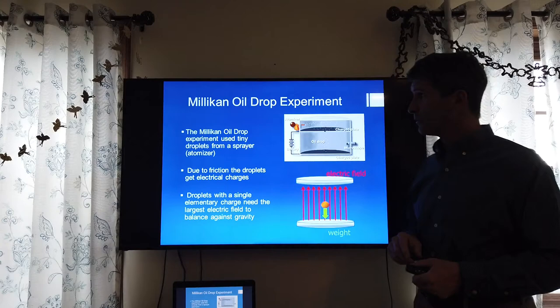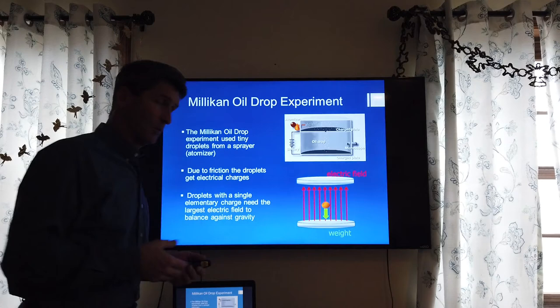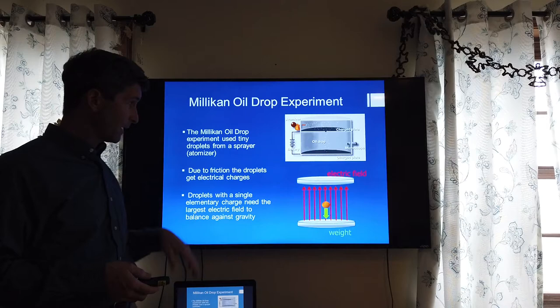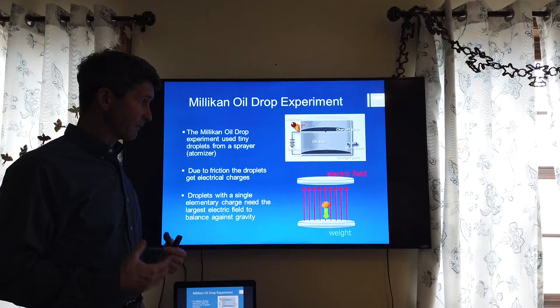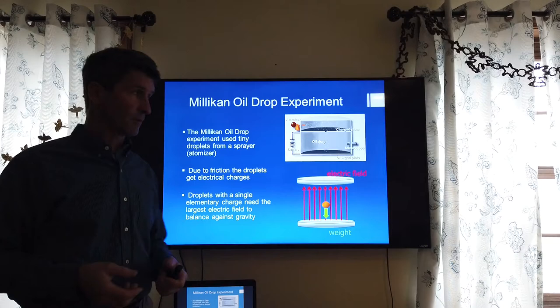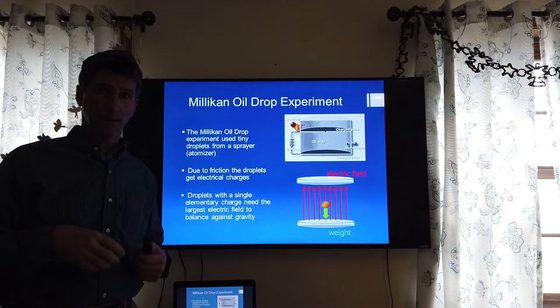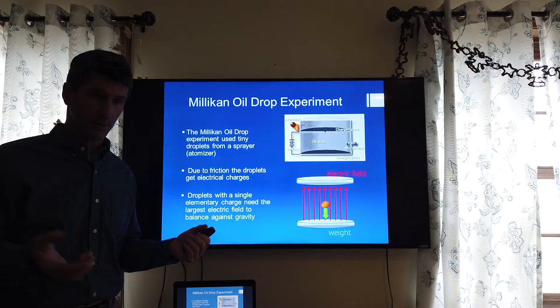The Milliken Oil Drop experiment is somewhat related to what we've discussed, but a bit of a tangent. It's really related to the concept of parallel plates — with parallel plates we can put a positive and negative charge on each plate and get a fairly uniform electric field, uniform in both magnitude and direction. In this experiment, Milliken would use an atomizer — basically a perfume sprayer — to spray oil droplets, which through friction would gain electrical charge.